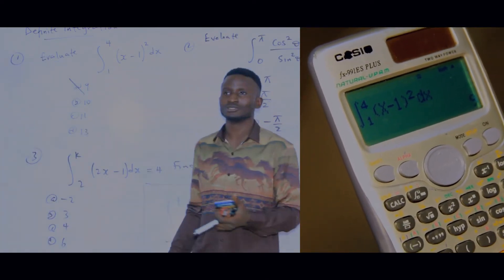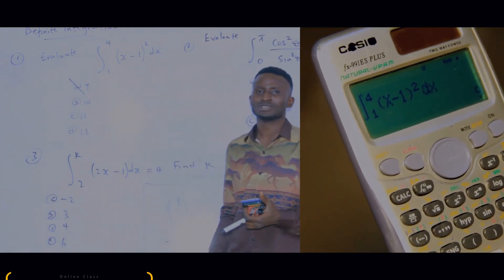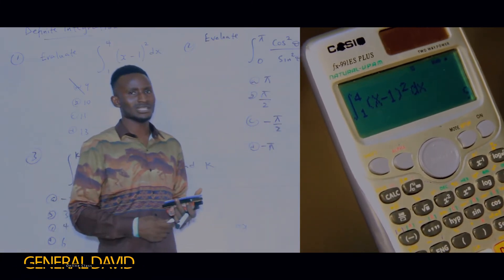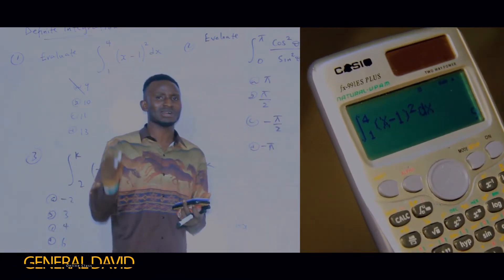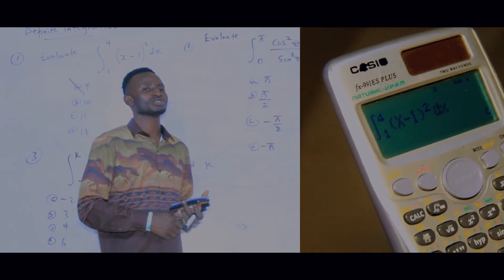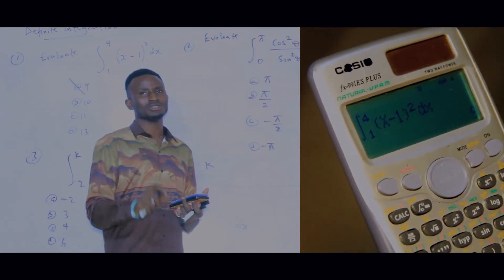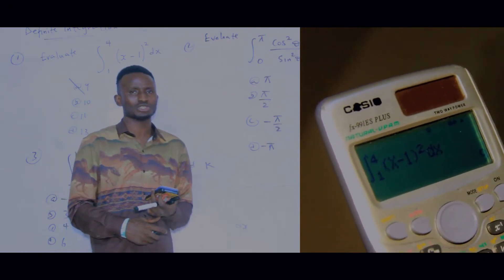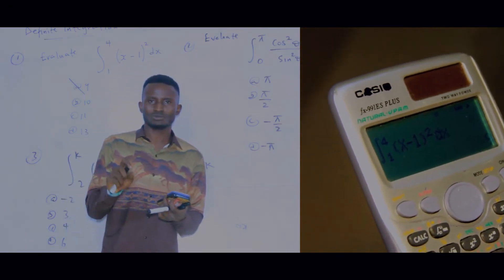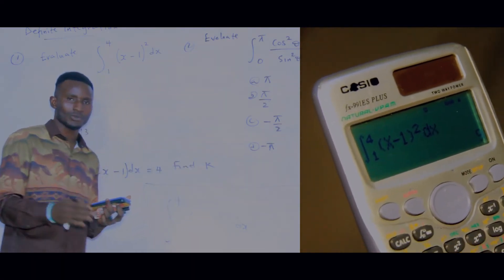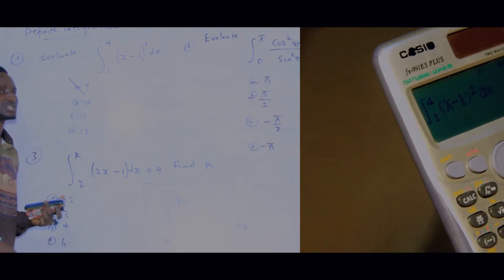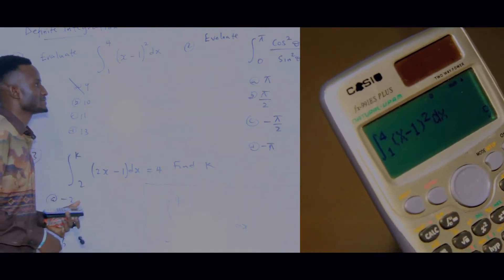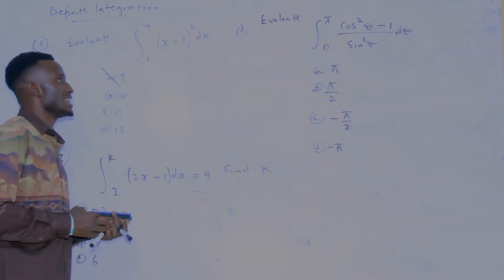That is how to deal with definite integration on the Casio 991 ES Plus. Some of you are asking about the Casio ClassWiz — yes, I will make videos on the ClassWiz showing calculator tricks and shortcuts. But for now, follow along with the Casio 991 ES Plus. Press AC to clear and move to the next question.